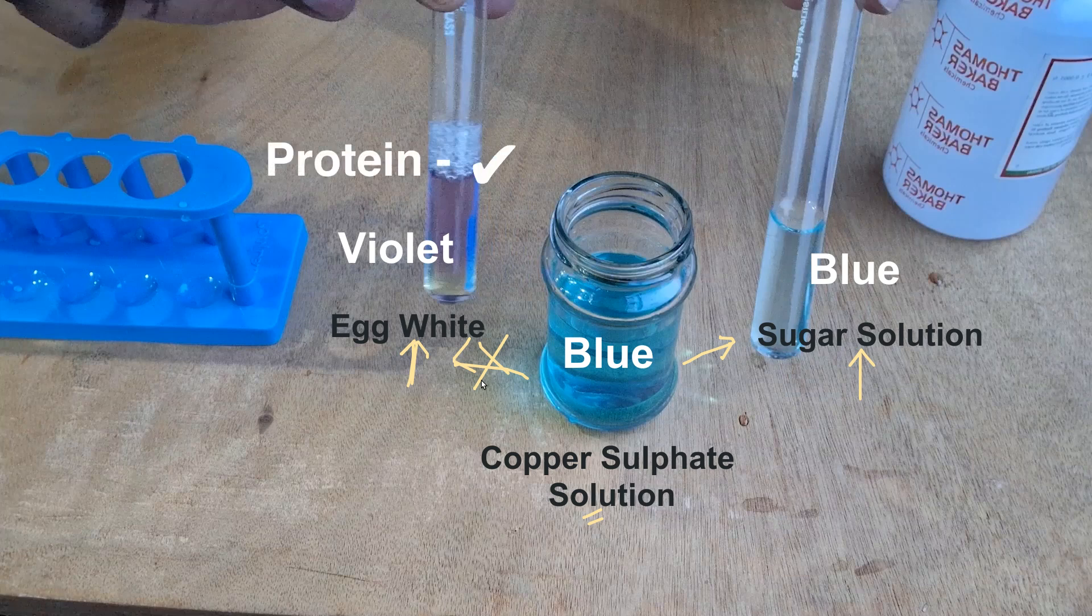The egg white tested positive for protein, whereas the sugar solution tested negative for protein. I'd encourage you to go and try this out in your school lab. It'll be fun. Thanks for watching!